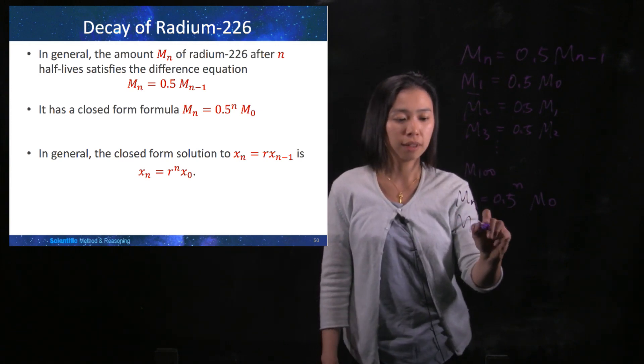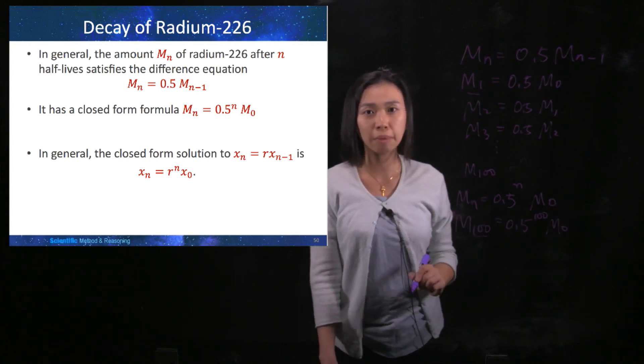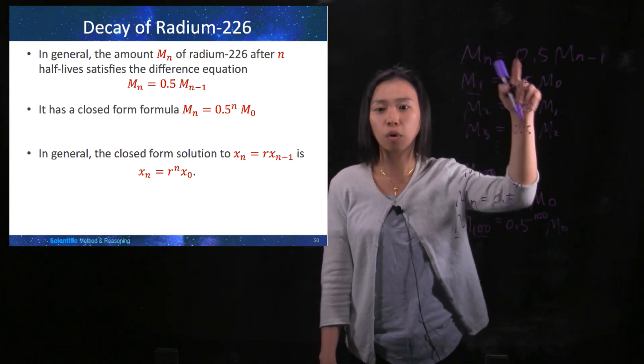To find M100, you simply need to substitute n = 100, and you can find M100 without going through all these tedious processes.